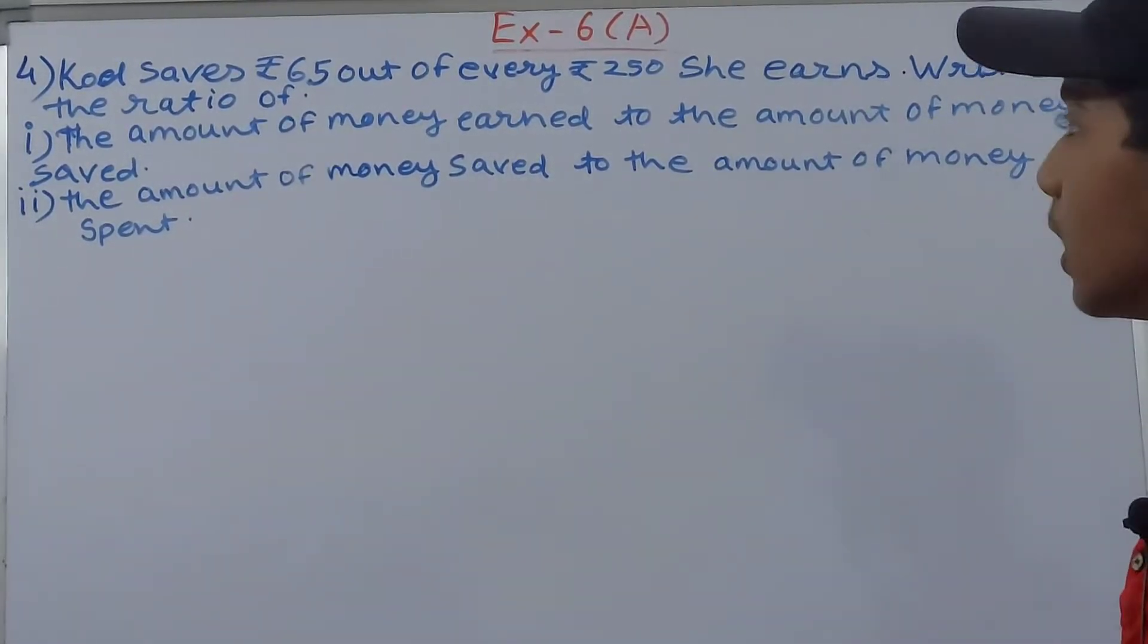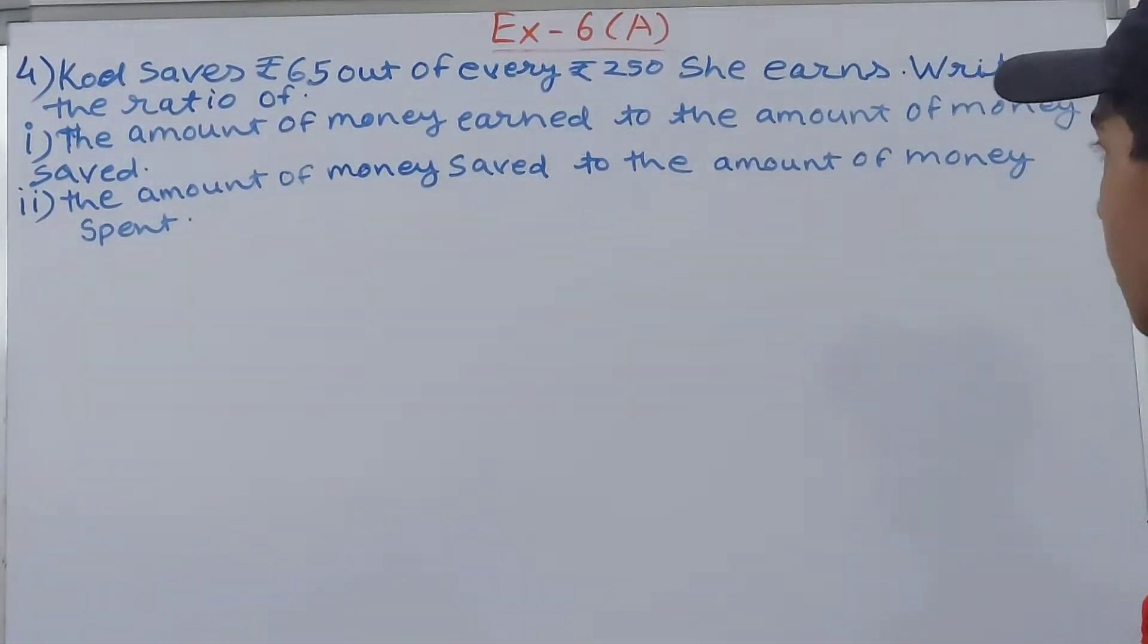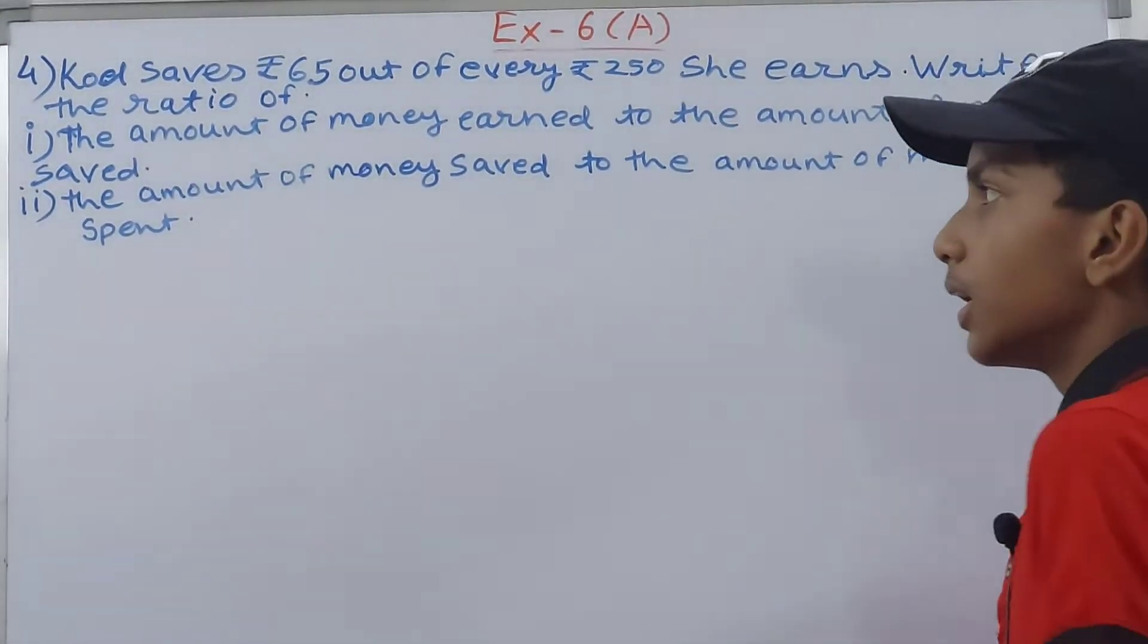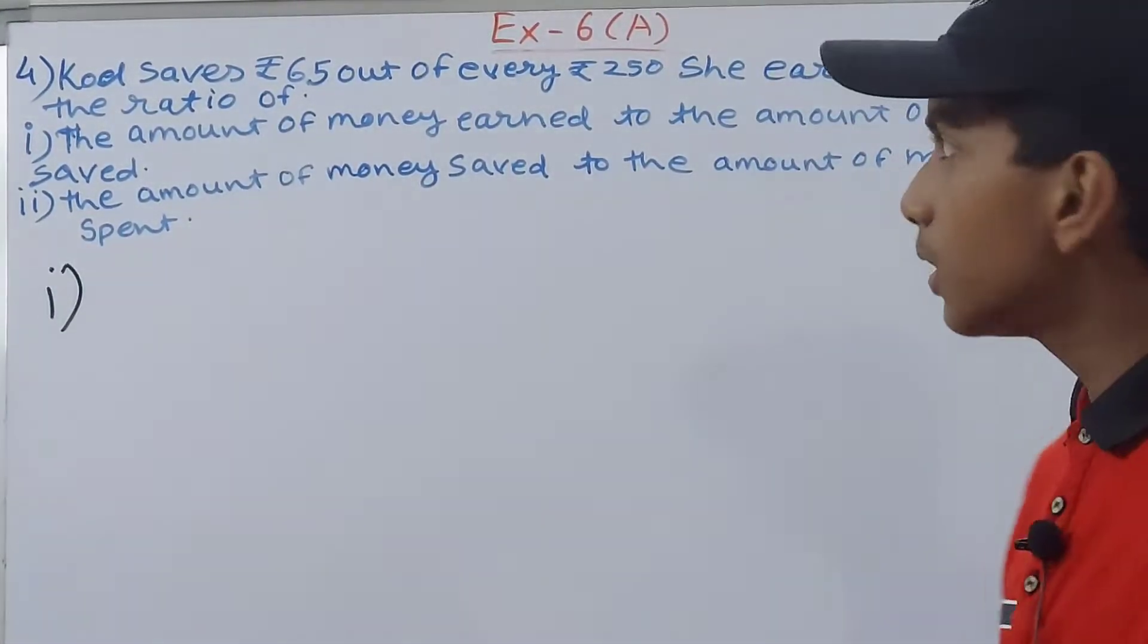Write the ratio of: first is the amount of money earned to the amount of money saved. So write it like this - the amount of money she has earned is what?